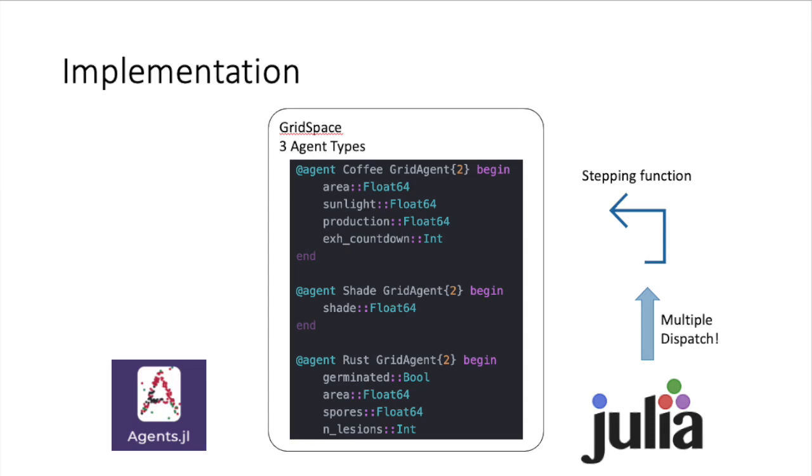So, this agent-based model object had a grid space, which corresponds to the mentioned farm grid. And in this case, I created three agent types. One is for the coffee, one is for the shade, and one is for the rust. And the model is initialized with shade and coffee agents and a limited number of rust agents. And this epidemic is evolved through the stepping function, which is worth to note that it was easy to implement thanks to the multiple dispatch feature of Julia.